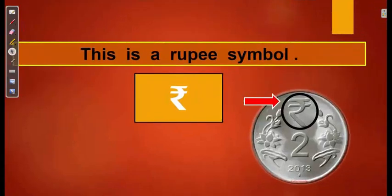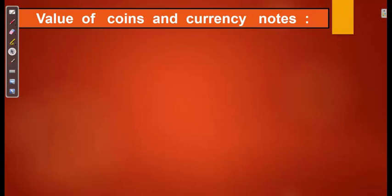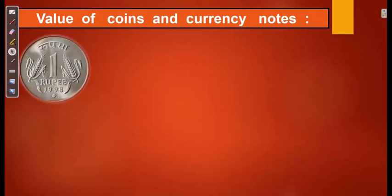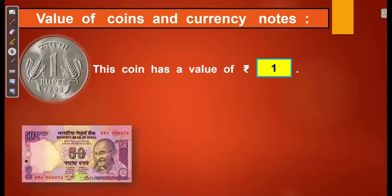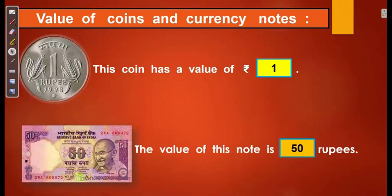This is the Rupee symbol. Value of Coins and Currency Notes — what do you mean by value? Value means the amount that is written on a coin or a currency note. For example, here we have a Rupee 1 coin, so this coin has a value of Rupee 1. Next, we have a 50 Rupees note, so the value of this note is 50 Rupees.